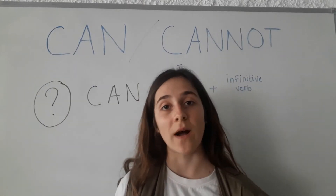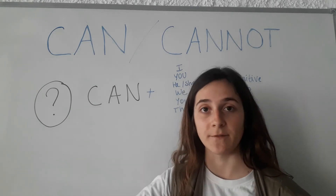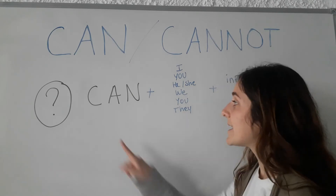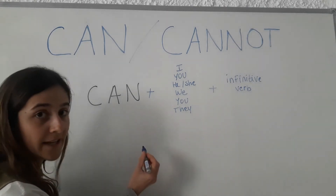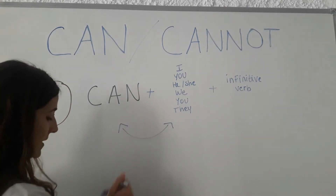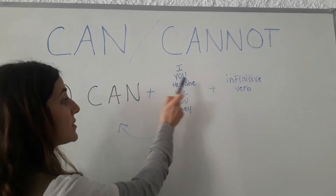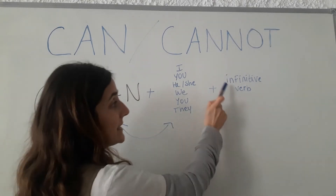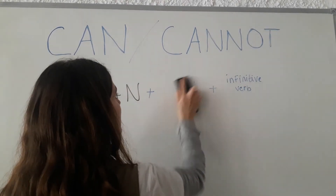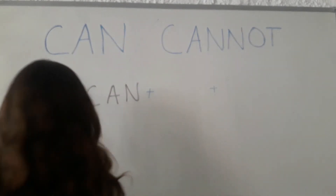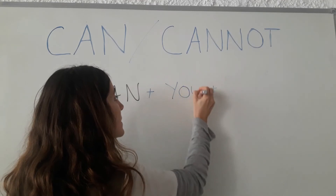Now we will see how to ask a question. This is different from the affirmative and negative. Because, as you can see, can comes first. So we exchange the two. It works like this: can, plus the pronoun — I, you, she, we, you, they — plus the infinitive verb. For example: can you jump?